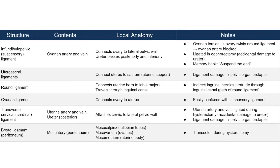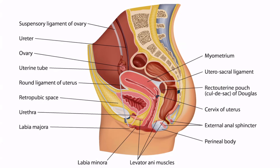For the round ligament, just remember that it travels through the inguinal canal and connects to the labia majora. This means that indirect inguinal hernias will protrude through the inguinal canal, which is the path of the round ligament. This sagittal image is perhaps the best one to represent the round ligament — you can see how it attaches to the uterine horn and then reaches down to the labia majora.